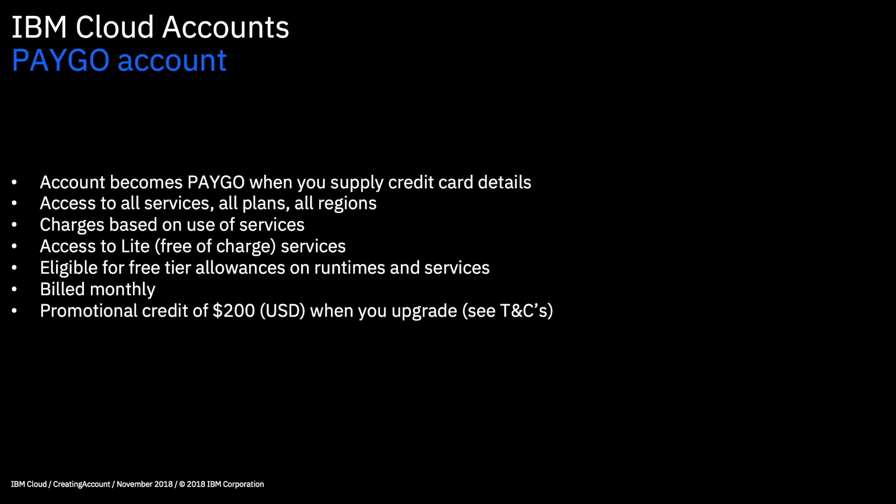To get a PAYGO account, all you need to do is add your credit card details into the console — I'll show you where to do that in the following lab. When you add a card, IBM does some credit checks and normally your PAYGO account will be active within a few minutes. If you get problems having your card accepted, you should contact IBM Cloud Support.